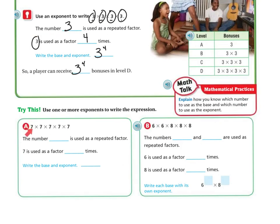Let's look at another level. We have 7 times 7 times 7 times 7 times 7. The number 7 is the one being repeated, and it is repeated 5 times, so we're going to have 7 to the 5th power.